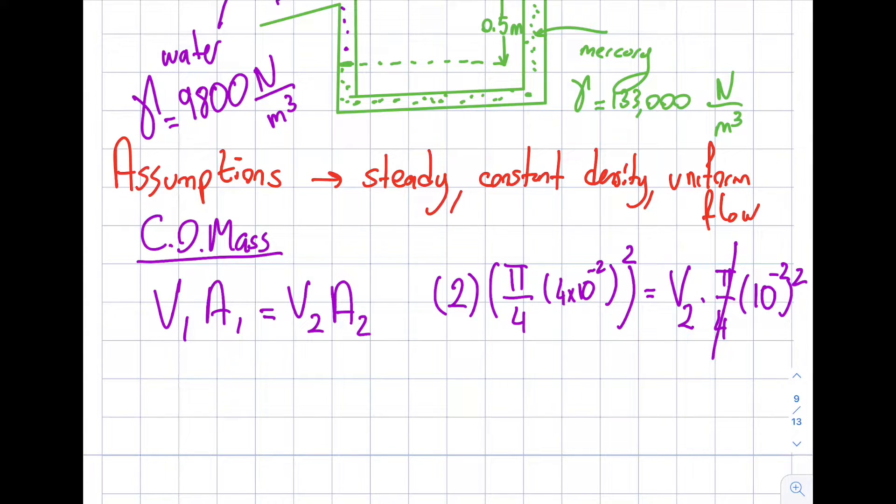So if I look over here, the pi over 4th cancel, 10 to the minus 2 squares cancel. And you see over here, I get myself V2 as 2 times 4 square is 16, so that is 32 meter per second.